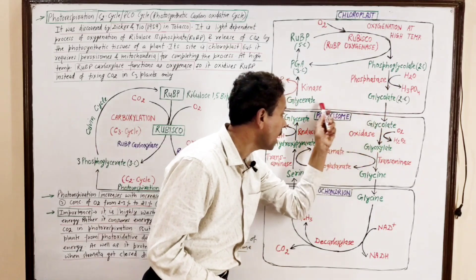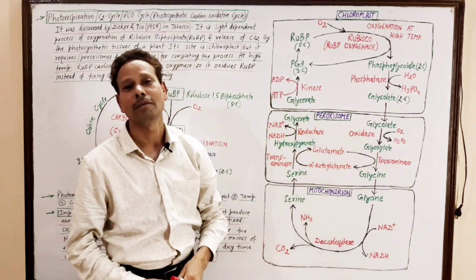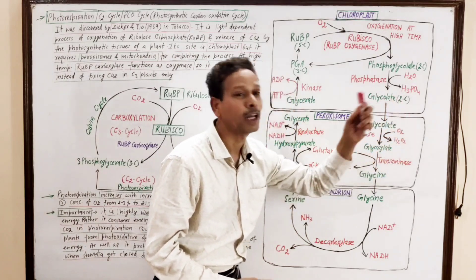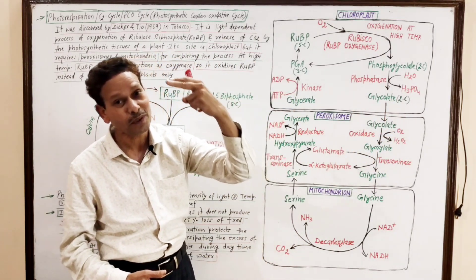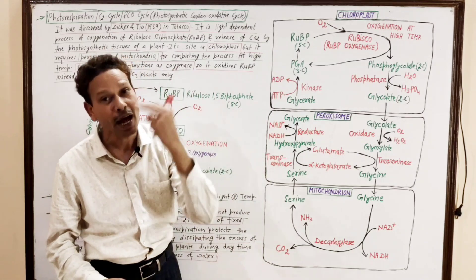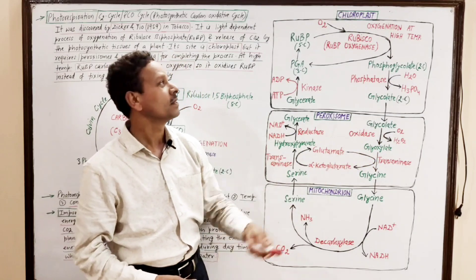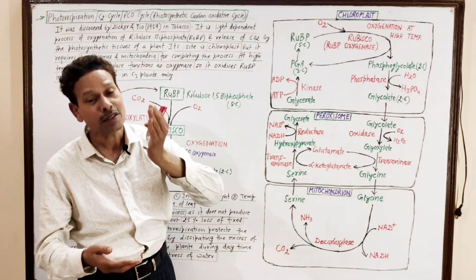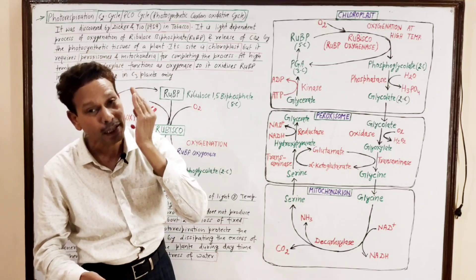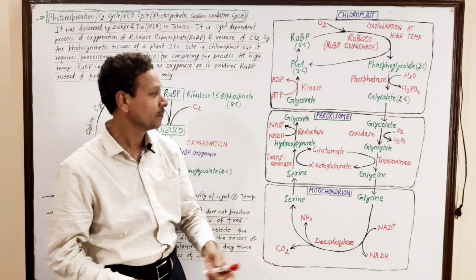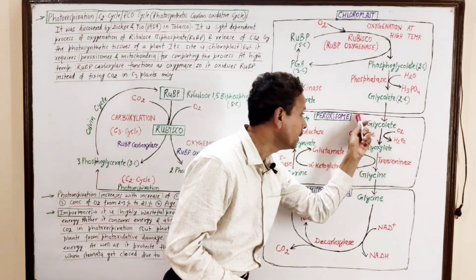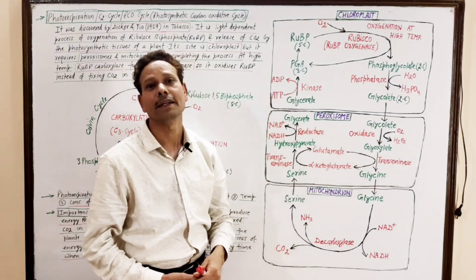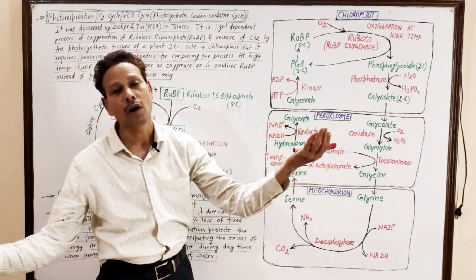This glycolate enters another cell organelle — the peroxisome. Here in the peroxisome, the glycolate molecule, in the presence of molecular oxygen — which is why the process is called photorespiration, occurring during daytime in the light — gives rise to glyoxylate. The reaction is catalyzed by an oxidase enzyme.